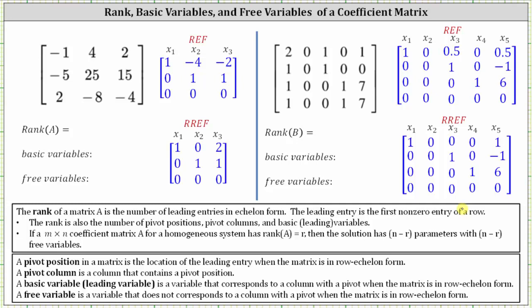If we have an m by n coefficient matrix A for a homogeneous system of equations, and the rank of matrix A is r, then the solution to the homogeneous system has n minus r parameters with n minus r free variables. Notice n is the number of columns in the coefficient matrix, and r is the rank of the coefficient matrix.